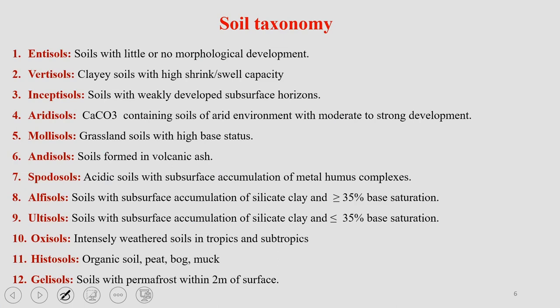There are various different types of soil taxonomies. The classification starts with Entisols, Vertisols, and so on. Each one has very special characteristics, and from this taxonomy we can understand which type of soil or land resource requires which kind of management, because the taxonomy tells us the nature and characteristics of a particular soil resource. For example, Entisols are soils with little or no morphological development, while Vertisols are clay soils with high shrinking and swelling capacity.